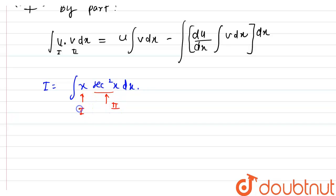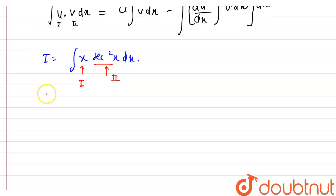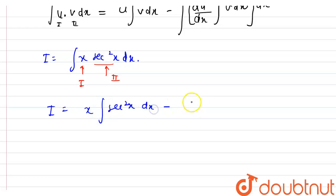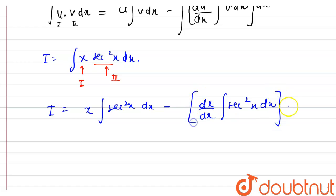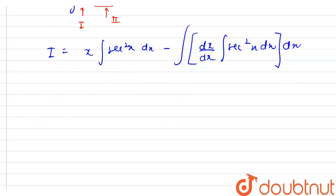So x is my first function and sec²x is my second function. I'm writing: I equals first function as it is, times the integral of the second function, minus the differentiation of the first function with respect to x multiplied by the integral of the second function, all integrated with respect to x.